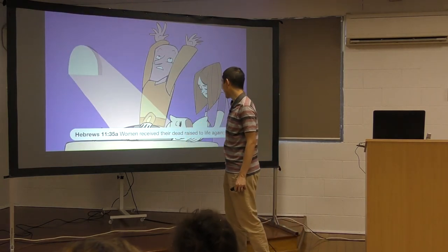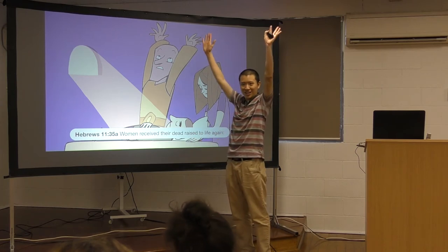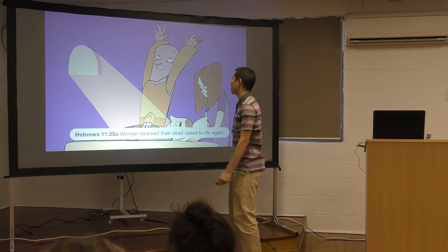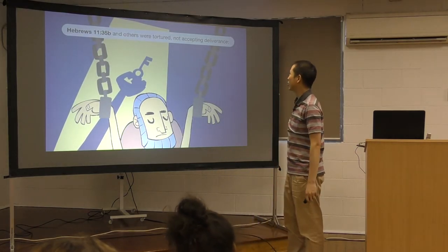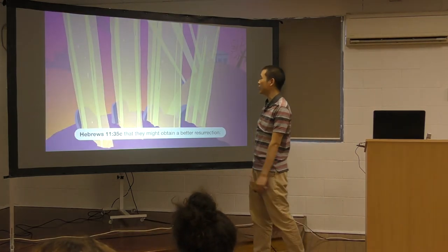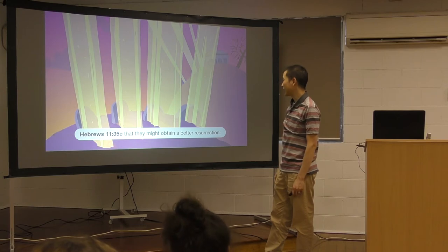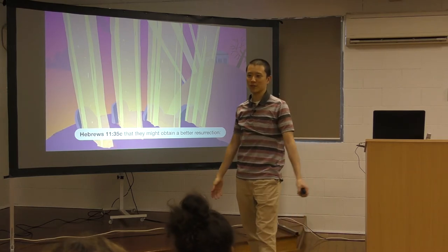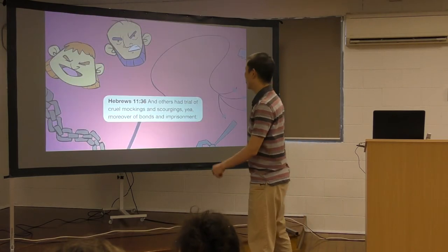Women received their dead, raised to life again. Who's this Elisha? Elisha raised the widow's son back to life. And others were tortured, not accepting deliverance. Because he's bound there in the chains in jail. That they might obtain a better resurrection. Why were they able to do it? Because they would get rewarded later on in heaven.